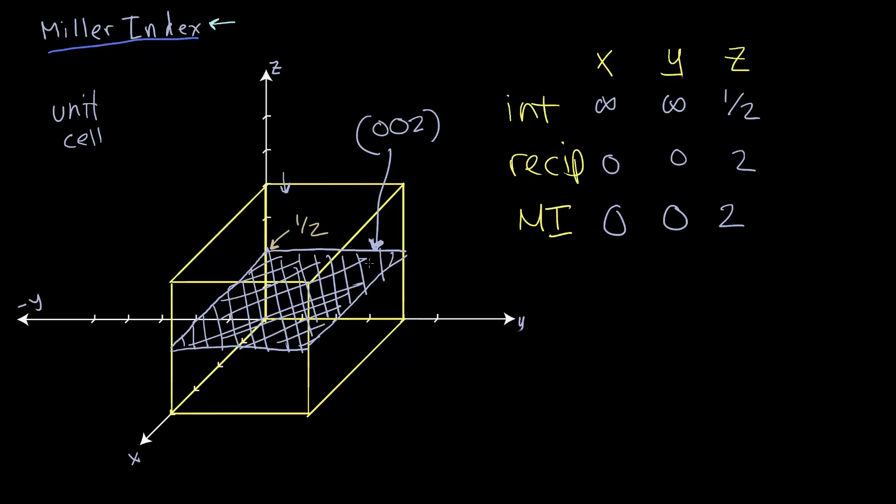It's very easy to just say this is the 0, 0, 2 plane. And if everyone has learned how to deal with their Miller indices, they will immediately recognize which plane we are describing.